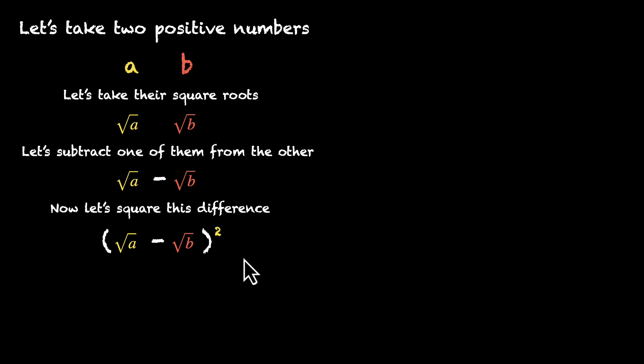And this is where the fun begins. So far we were just following along, but now we can make an interesting observation. This is a square, and squares can never be negative. So we can add an inequality: (√a - √b)² is always greater than or equal to zero. For the first time in our proof, we actually have an inequality.